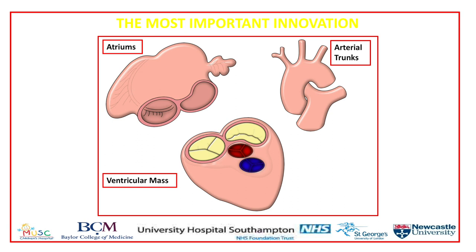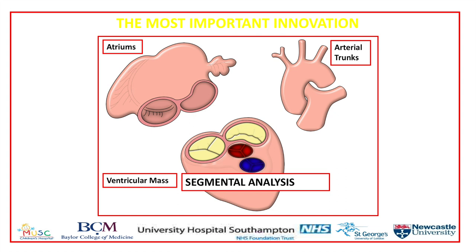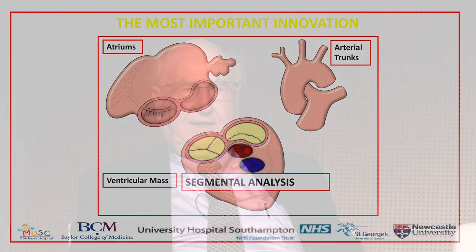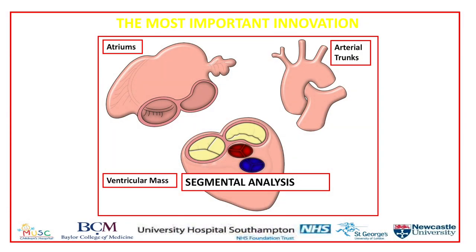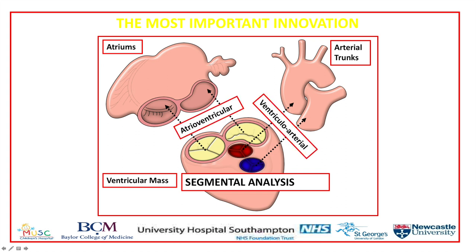Innovations in morphology. Without question, the innovation of segmental analysis was a huge step forward. It appeared in the mid-1960s — even I had not yet qualified in medicine at that time — but it didn't say everything. Segmental analysis was important, but it didn't tell us what was going on at the atrioventricular junctions and the ventricular arterial junctions. To know the full story, we also needed to know about the connections.